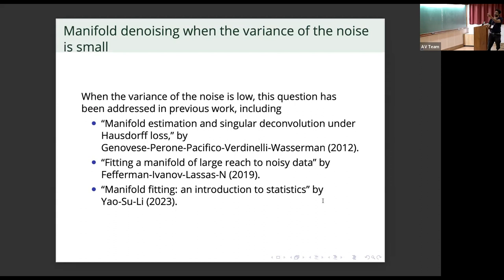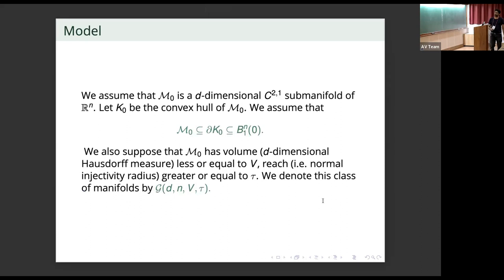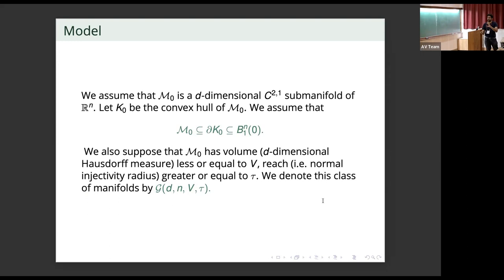When the noise is low, this question has already been addressed in previous work. Today I am going to talk about what happens when the noise is large. We are going to assume that M0, the manifold, which is unknown — think of this as the manifold of all denoised images obtained by doing cryo-EM, so completely noiseless — is a D-dimensional C21 sub-manifold, meaning the extrinsic curvatures are one-Lipschitz functions on the manifold.